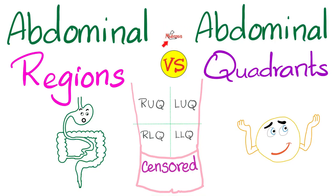What's up? It's Medicosis Perfectioneros where medicine makes perfect sense. Today we have an anatomy video about the difference between abdominal regions and abdominal quadrants. The abdominal regions are nine. The abdominal quadrants are only four. And with that said, now let's get started.